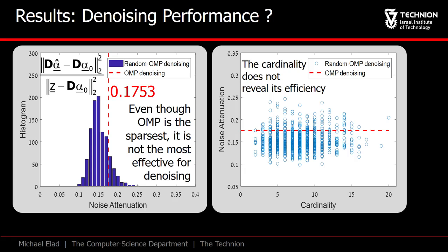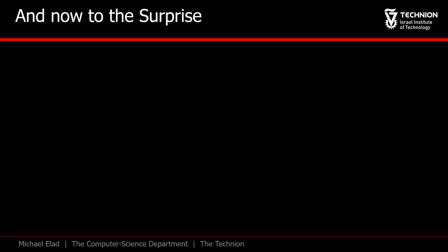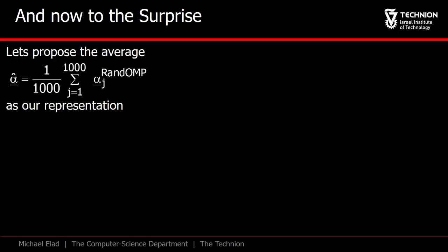These are somewhat surprising results, don't you think? And now, here is something that will really blow your minds. We will take all the 1,000 solutions that the random OMP gave us and simply average them, getting alpha hat.